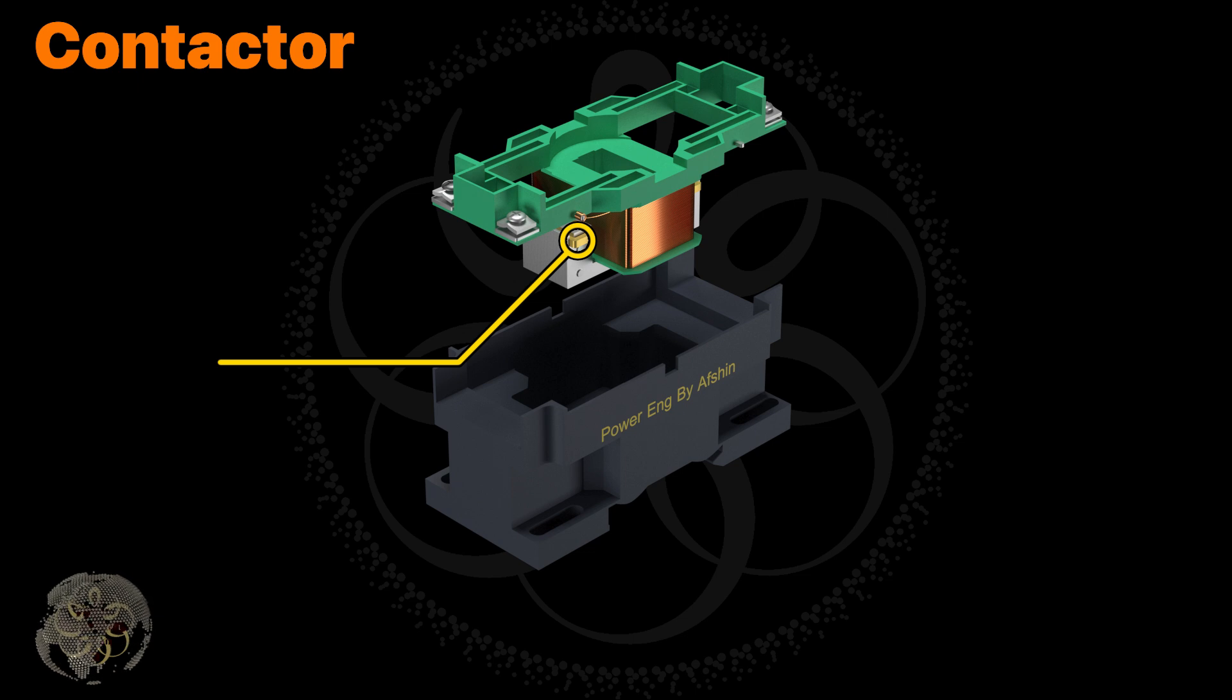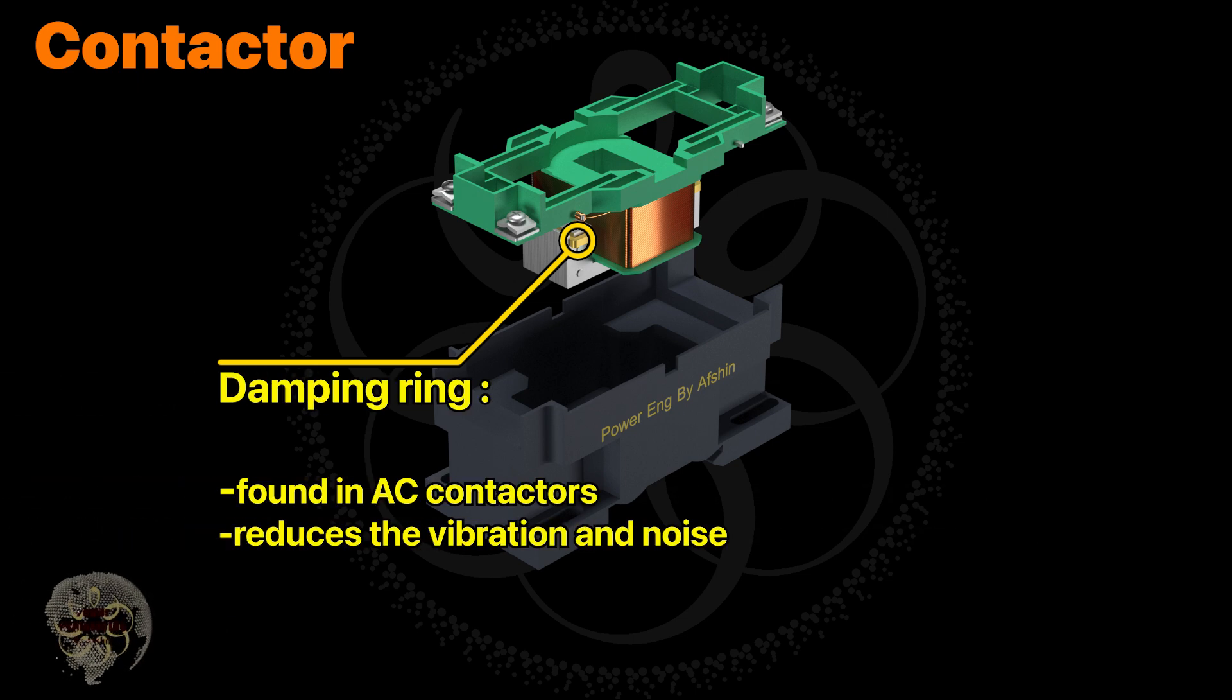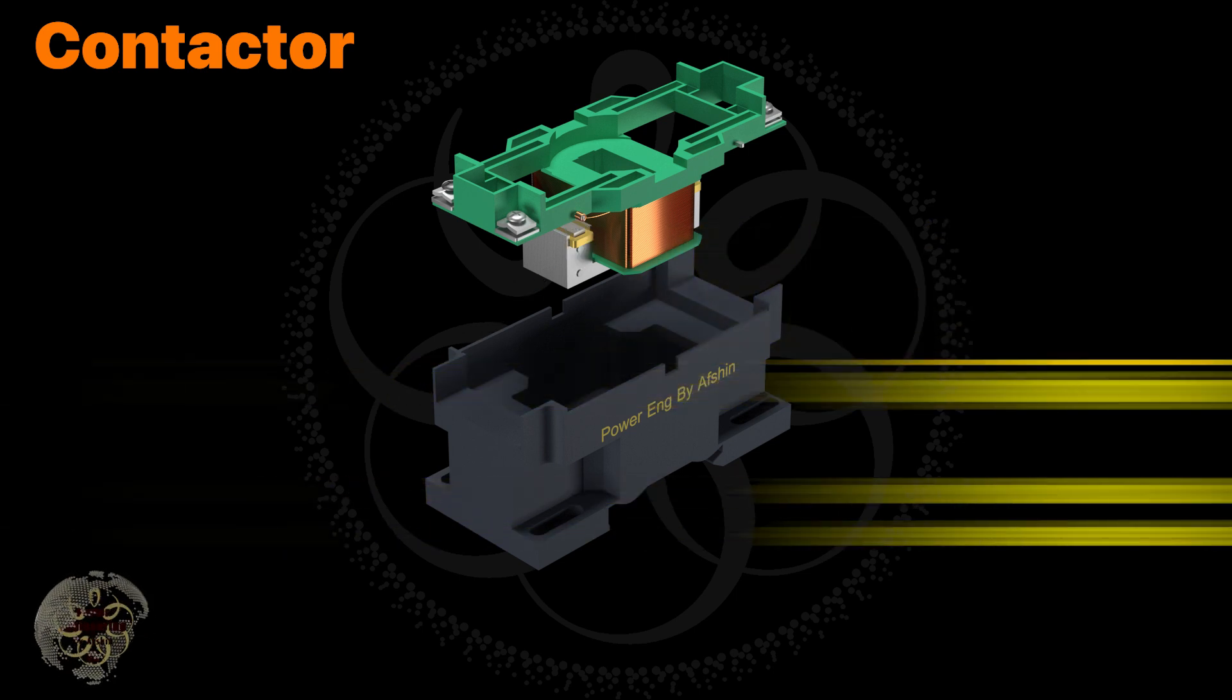The damping ring is typically found in AC contactors and reduces the vibration and noise caused by the alternating magnetic field. This ring ensures that the magnetic flux through it is not in the same phase as the flux in the core. As a result, when the core's flux passes through zero, the flux in the ring helps stabilize the armature.